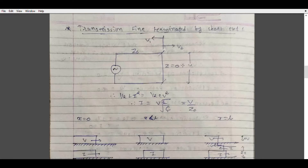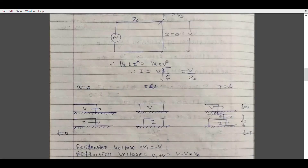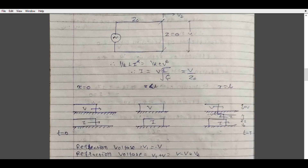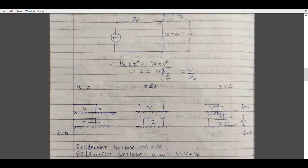When the switch is closed, a voltage wave of magnitude I starts traveling towards the shorted end, or the receiving end. From that you can see that (1/2)LI² = (1/2)CV², and the value of I is nothing but V/Zc. We consider x = 0, x < L, x = L, time t = 0. The wave is going to travel in a forward direction, so here it is V, V, V, I, I, I.